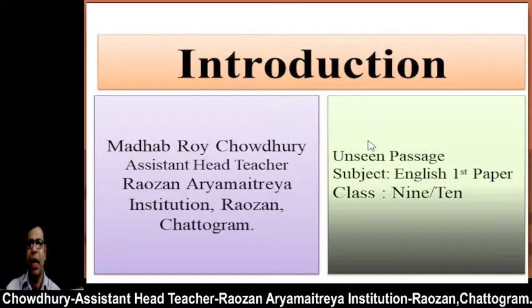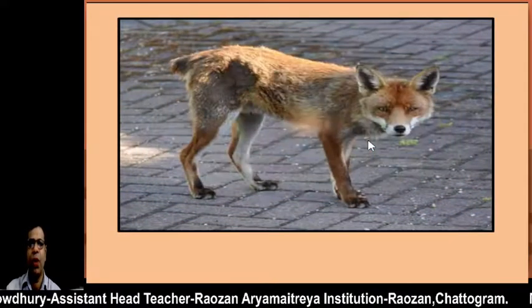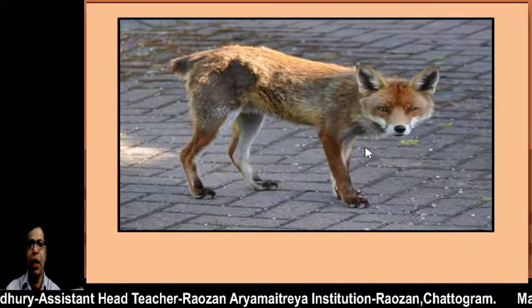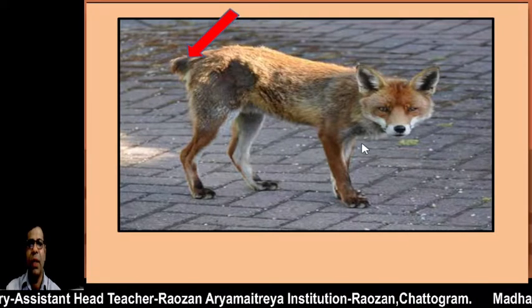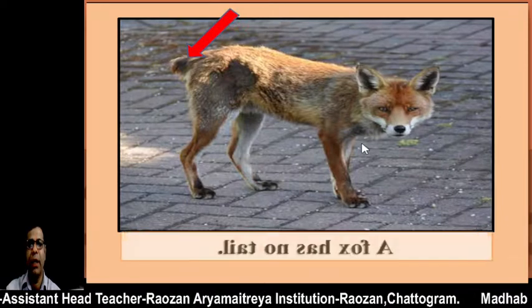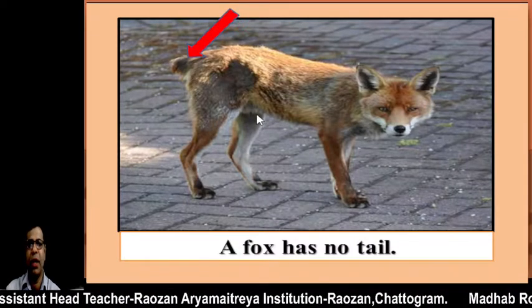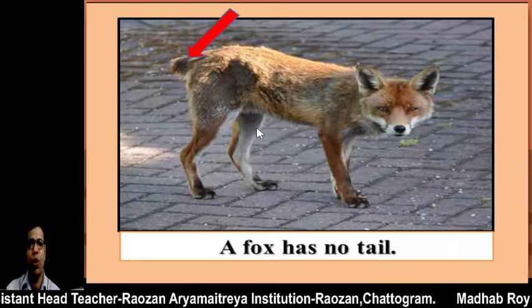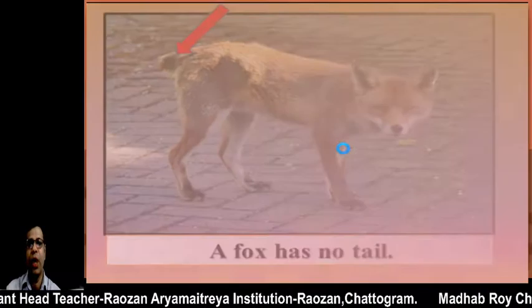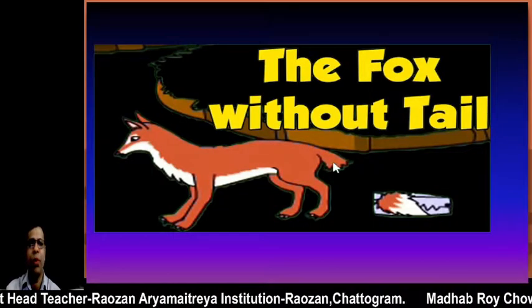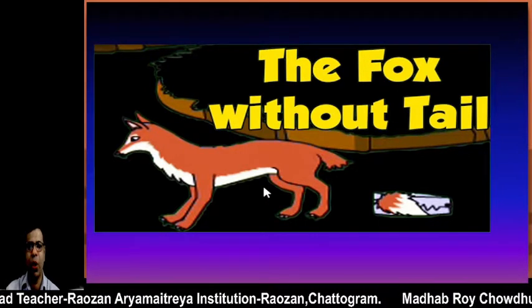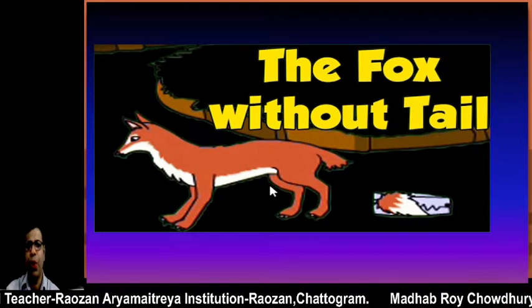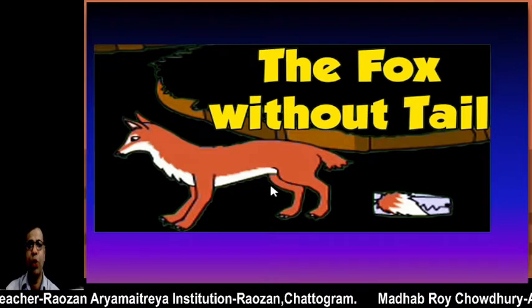Dear students, let's start. What can you see in the picture? This is a fox. And what happened to this fox? It's a fox and it has no tail. So can you guess what we are going to talk about? Yes, your idea is also right. Today we are going to talk about the fox without a tail.